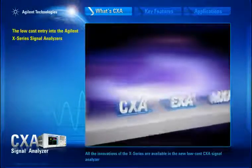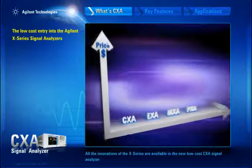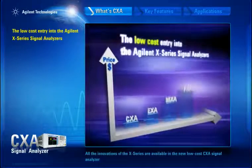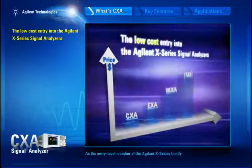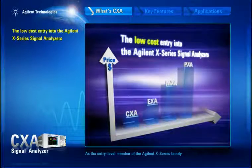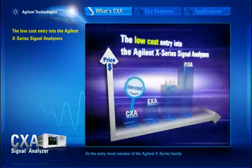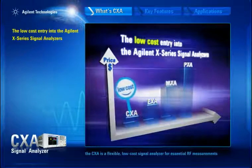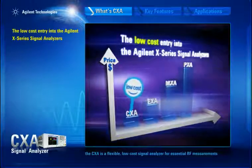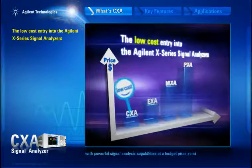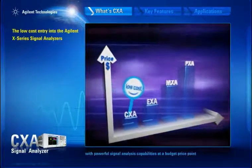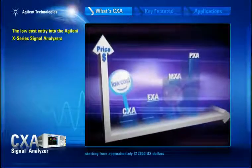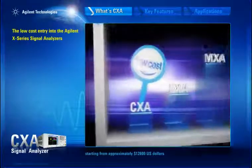All the innovations of the X-Series are available in the new low-cost CXA signal analyzer. As an entry-level member of the Agilent X-Series family, the CXA is a flexible, low-cost signal analyzer for essential RF measurements, with powerful signal analysis capabilities at a budget price point, starting from approximately $12,600.